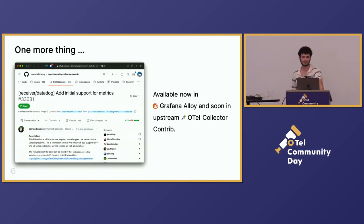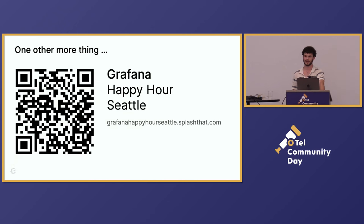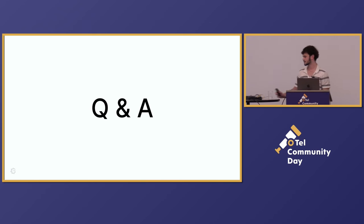One more thing — this is probably of interest to some people here. At Grafana Labs, we are adding initial support to the DataDog receiver on the OpenTelemetry collector, so you can use all of the OTel ecosystem with that type of data too. In this case you will get delta metrics, so if you want to convert them, this is one of the cases where conversion becomes required. This is available in our own distribution of the collector as we speak and will be upstreamed in the coming weeks. I was also asked to give a shout-out to Grafana Happy Hour Seattle — if you're interested, feel free to scan the QR code. And that's it for me, thank you.